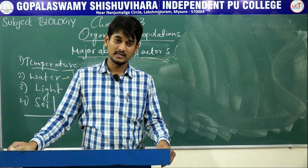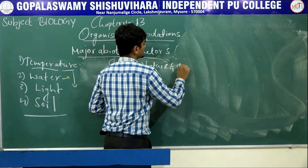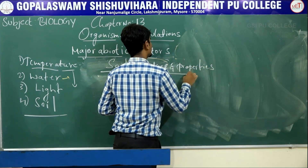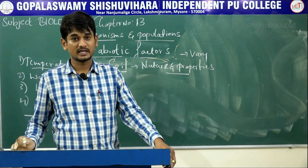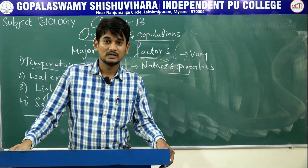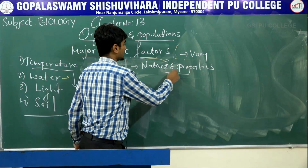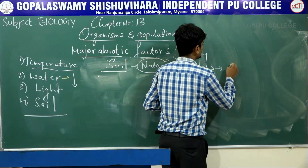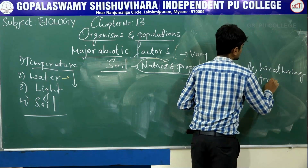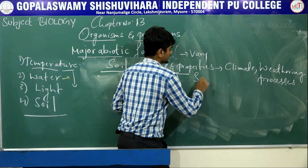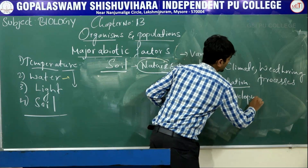The last major abiotic factor is soil. The nature and properties of soil vary in different places. Within Karnataka, for example, you can observe different types of soil such as red soil, black soil, and clay soil. The nature and properties of soil mainly depend on climate, weathering processes, sedimentation, and the method of development of soil.